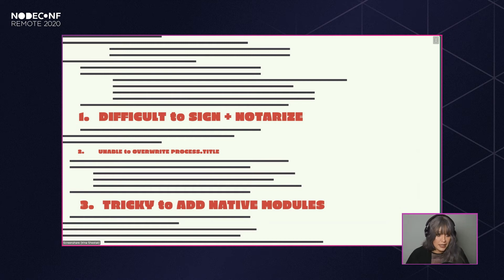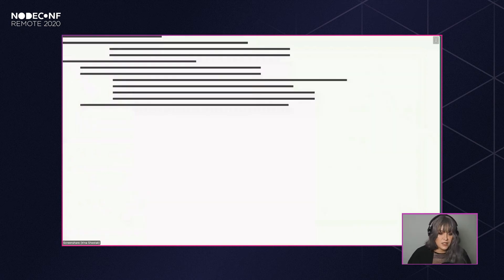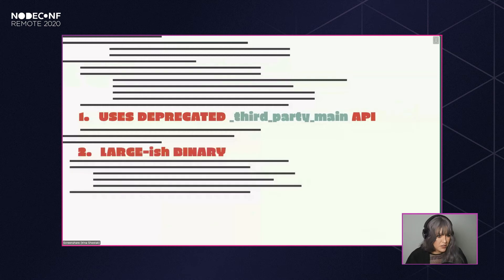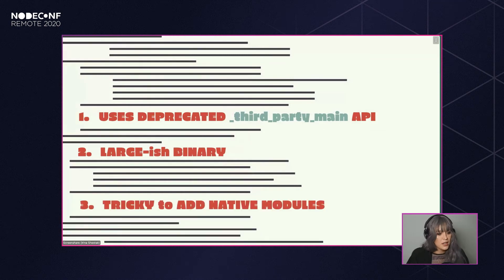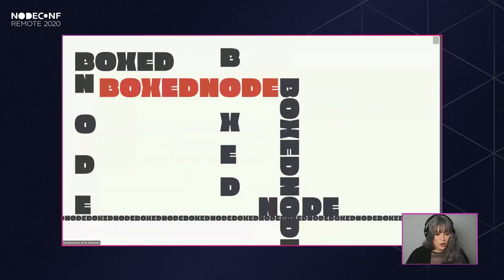When we wanted to sign and notarize, we used nexe, and we had dual compilation — separate compilations for different hosts. It worked for a little bit, but nexe uses the deprecated third-party main mechanism, meaning we'd be stuck on Node 12.x and couldn't move past that. It also created a slightly bigger binary, and in the future, once we wanted to add Kerberos support, it was tricky to add native modules.